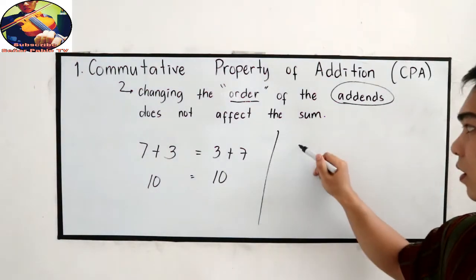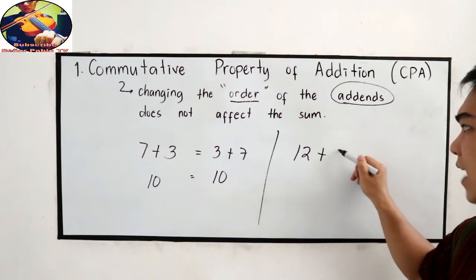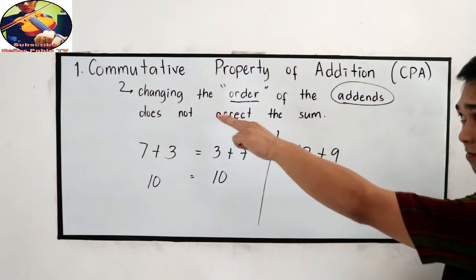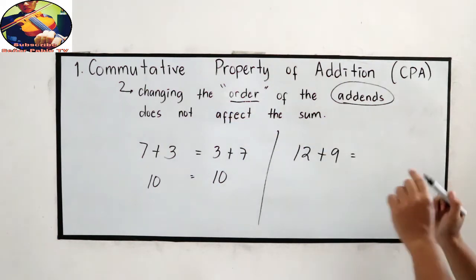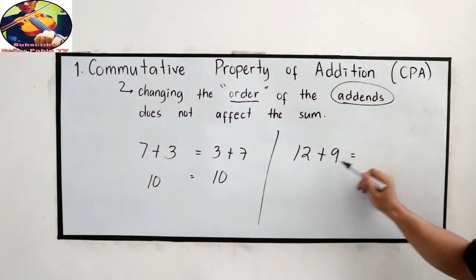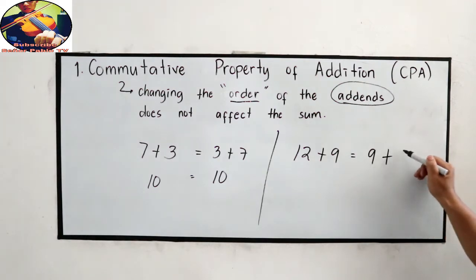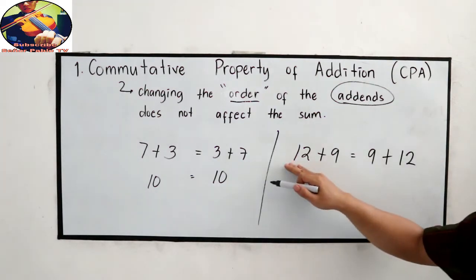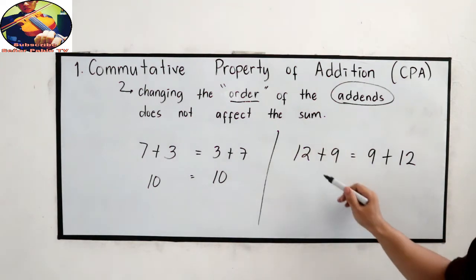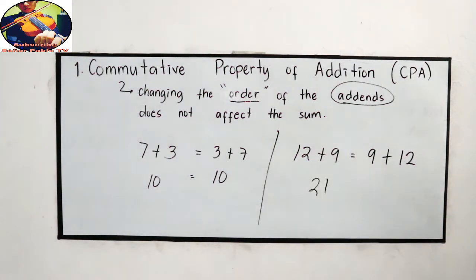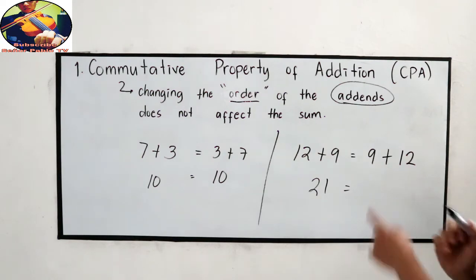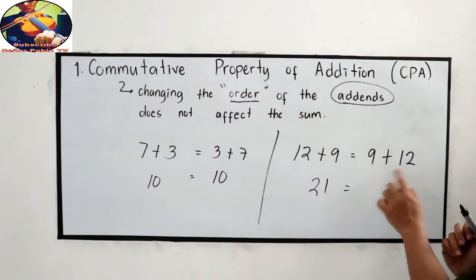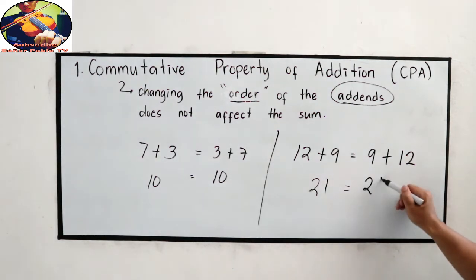Another one: 12 plus 9. Let's change the order — 9 plus 12. So, 12 plus 9 is 21, also the same as the sum of 9 plus 12, which is 21.